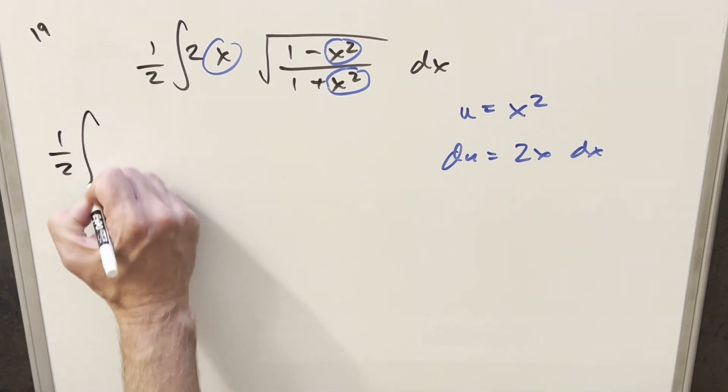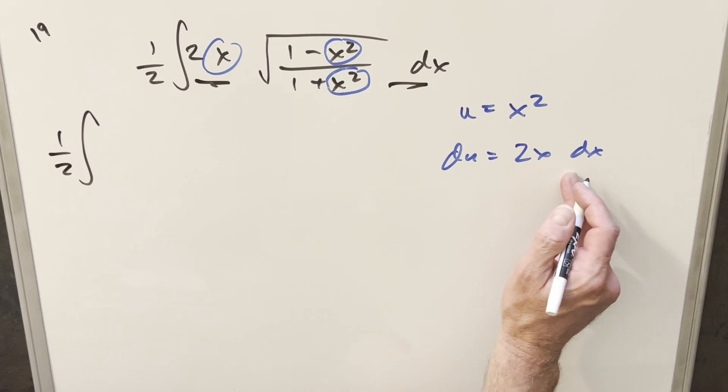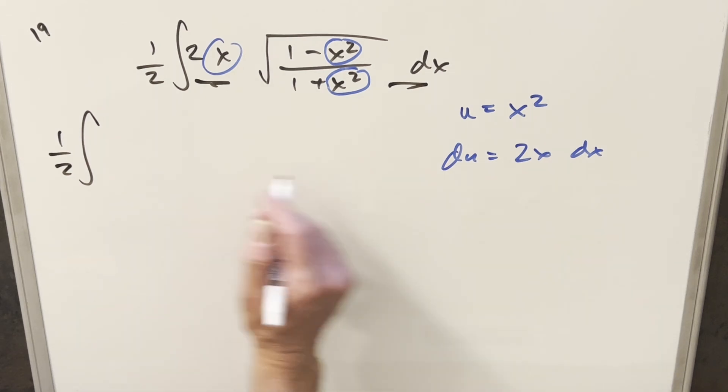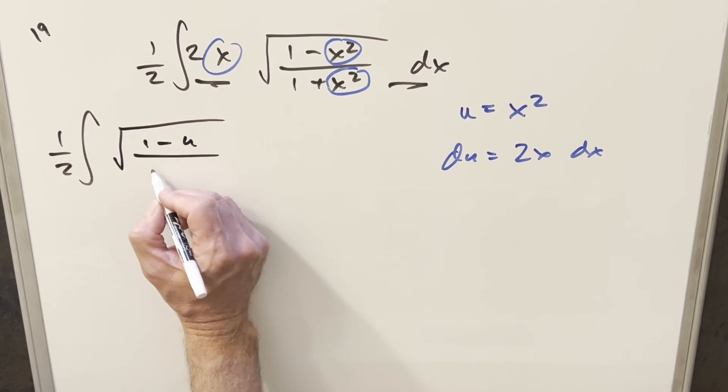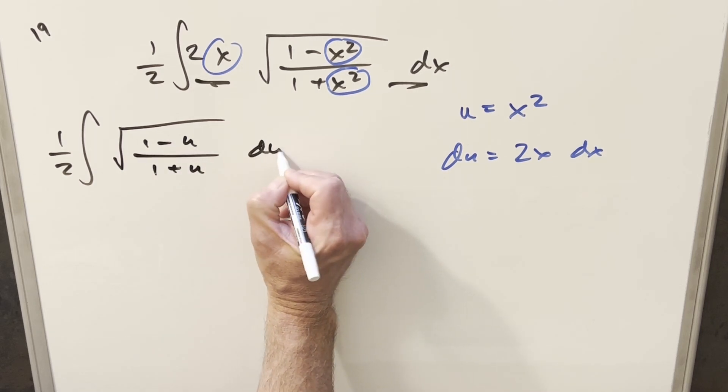So we'll have our one half up front. This 2x with this dx is going to be our du. So we'll have that at the end. This is going to transform into square root 1 minus u over 1 plus u du.